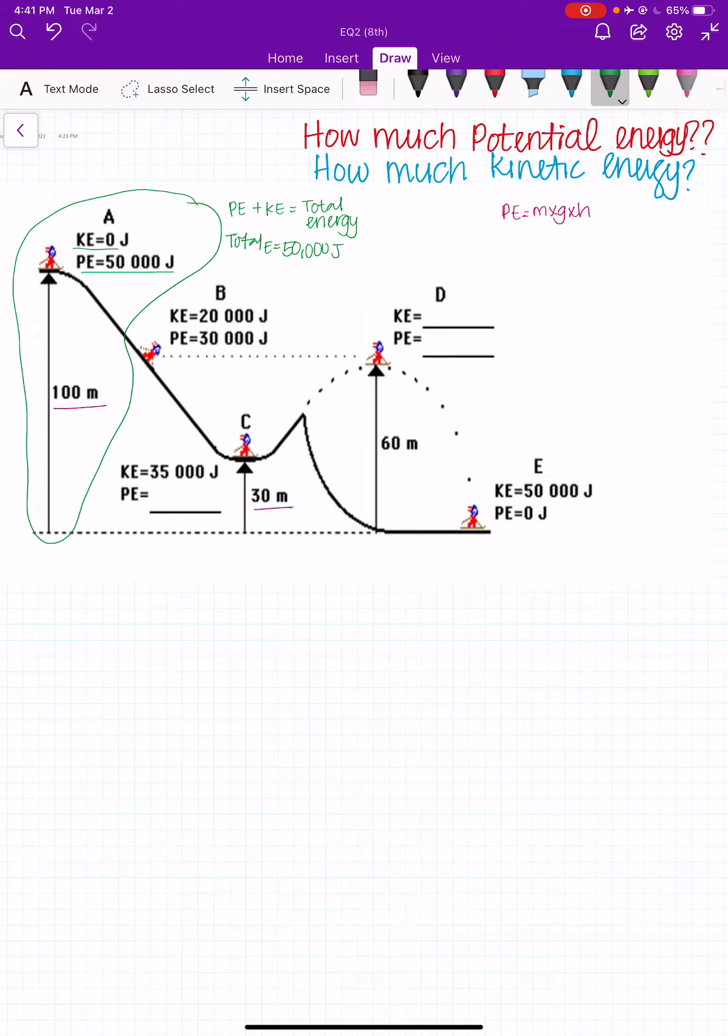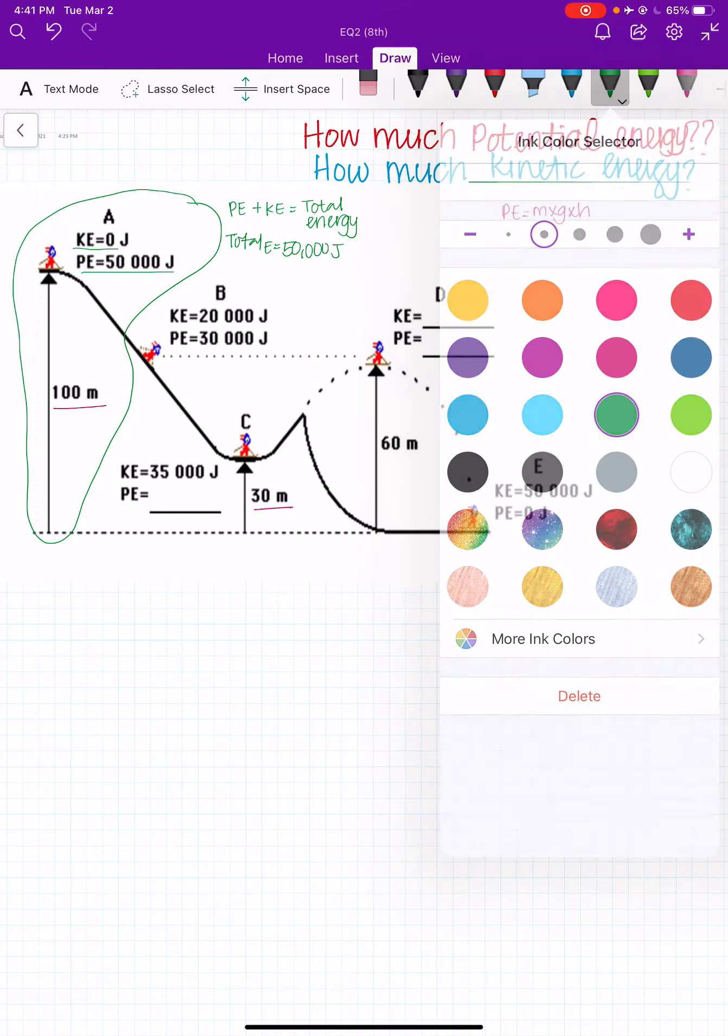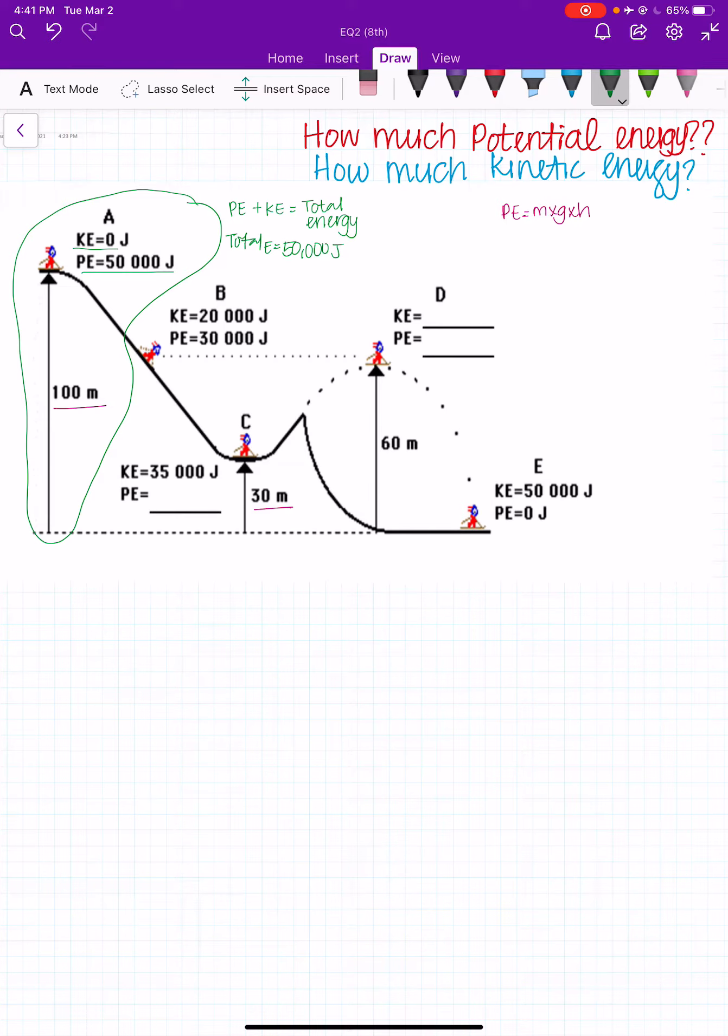So first things first, we're going to write down what we already know. Let's write down our formula one more time that we figured out last time and that we've got up at the top. Potential energy plus kinetic energy equals total energy.